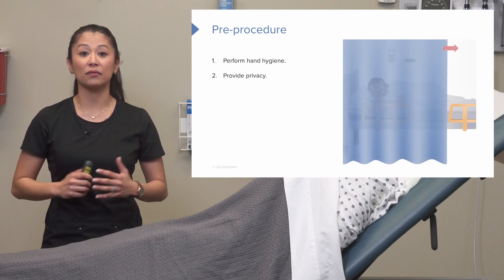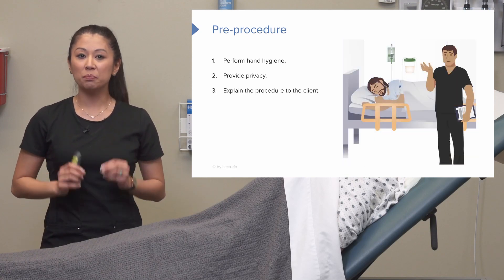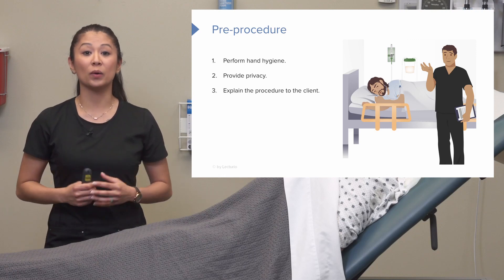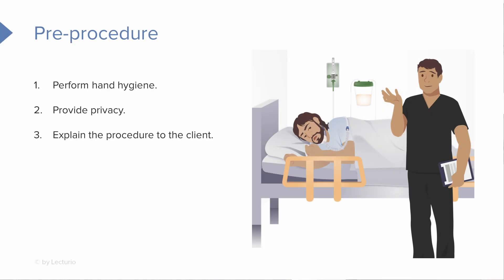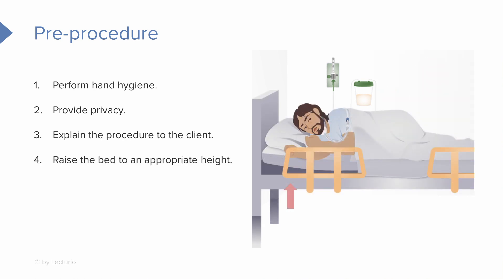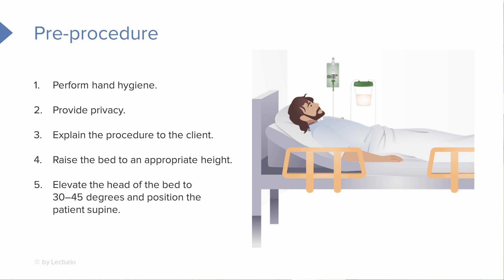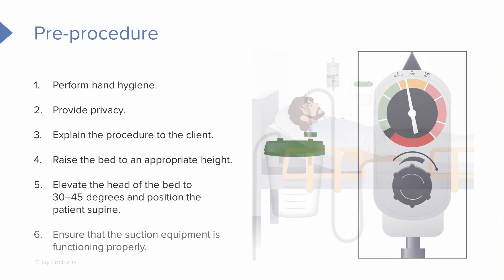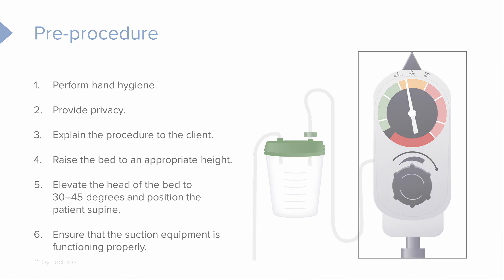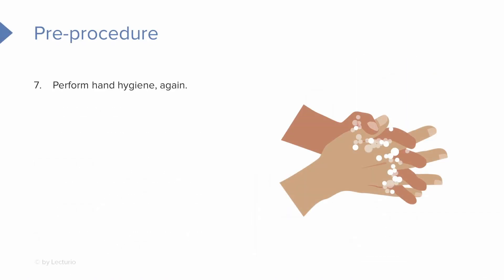Before we get started with the procedure, we want to perform hand hygiene and provide privacy to the patient. It's important to explain to the patient what's going to happen, because dealing with their artificial airway can cause apprehension. Fully explain the procedure first, then raise the bed to an appropriate working height, and elevate the head of bed at least 30 to 45 degrees because we're dealing with an airway.